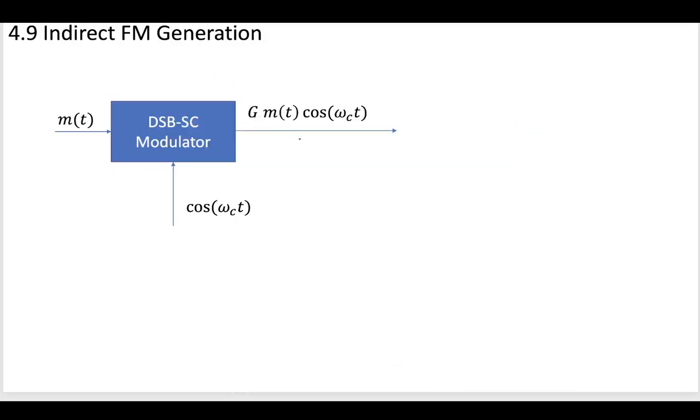So how would this look? This is our DSB-SC modulator. A message goes into one input, and a cosine wave of carrier frequency goes into another input. Out comes the message multiplied by the carrier wave. Your modulator might have some additional gain constant that increases or reduces the gain.